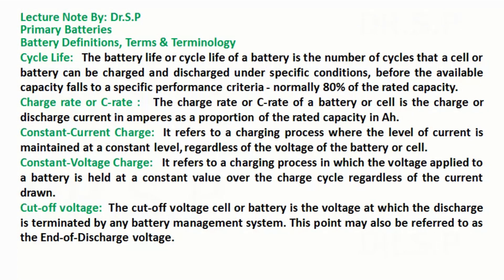Constant current charge: it refers to a charging process where the level of current is maintained at a constant level regardless of the voltage of the battery or cell. Constant voltage charge: it refers to a charging process in which the voltage applied to a battery is held at a constant value over the charge cycle regardless of the current drawn.